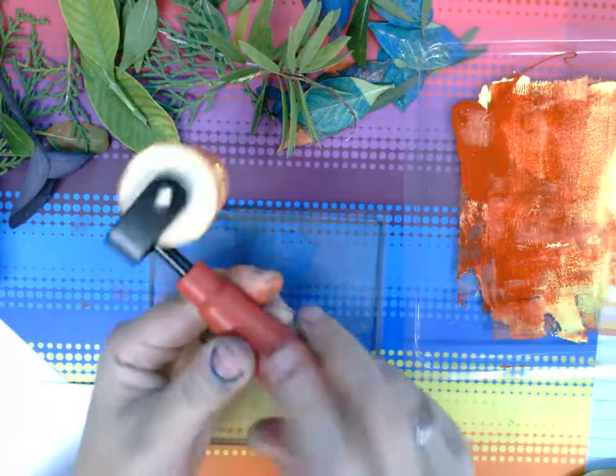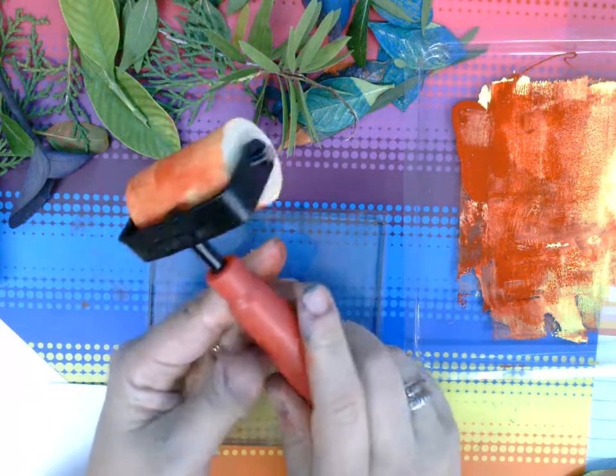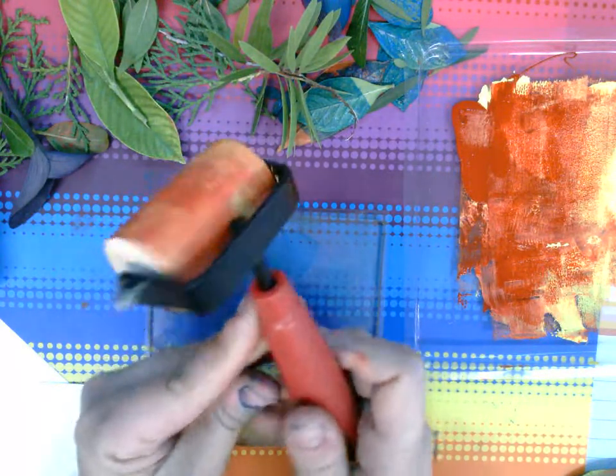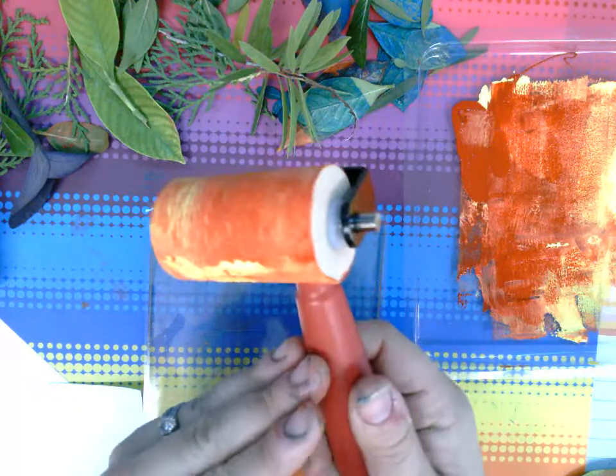So the first thing is I'm going to teach you about the tools. The first tool we're going to use is called a brayer, and this is how we're gonna apply our ink. It's like a little roller.